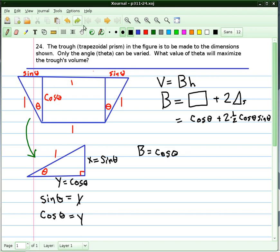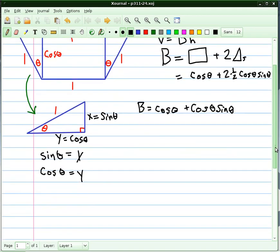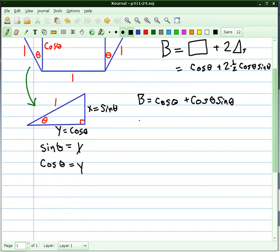We have to take the derivative of this. We're going to take the derivative of that, set it equal to 0, and see if we can find a maximum.